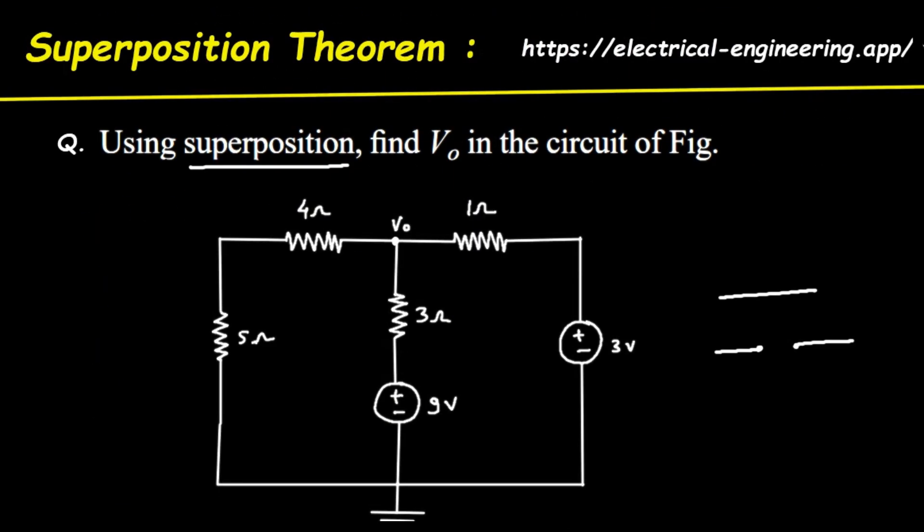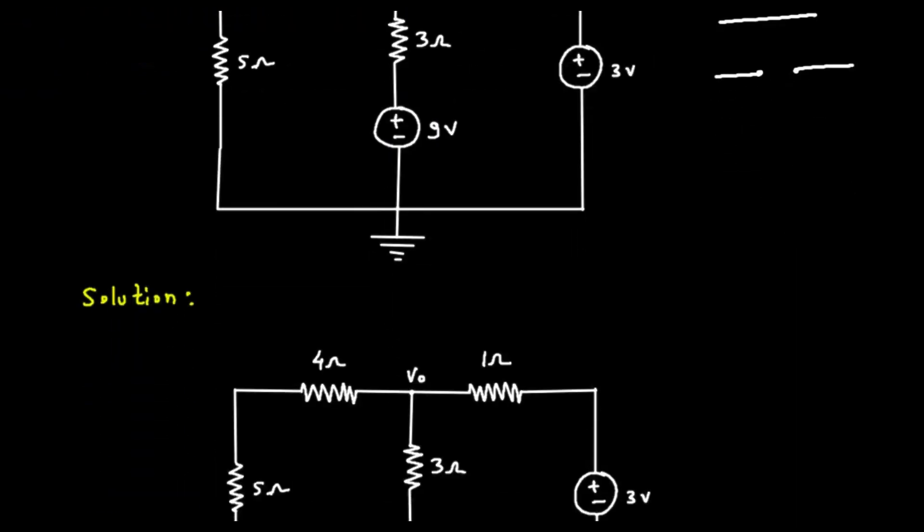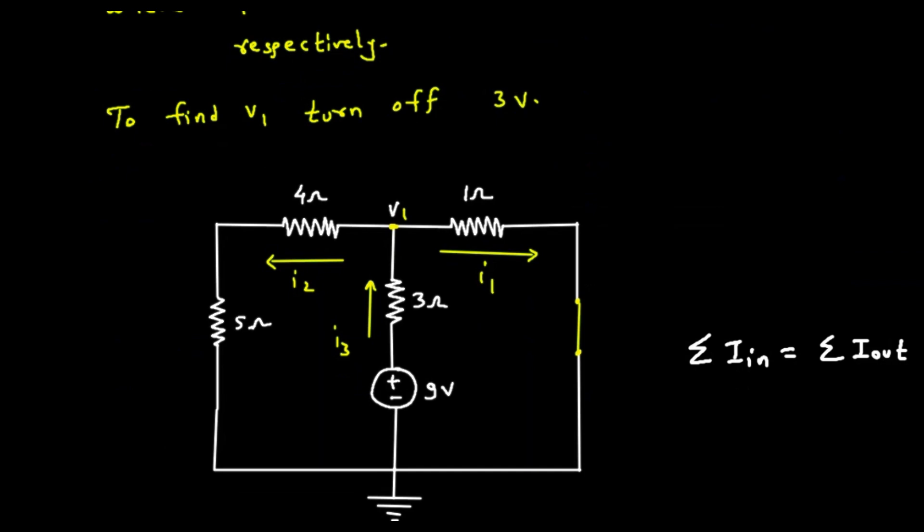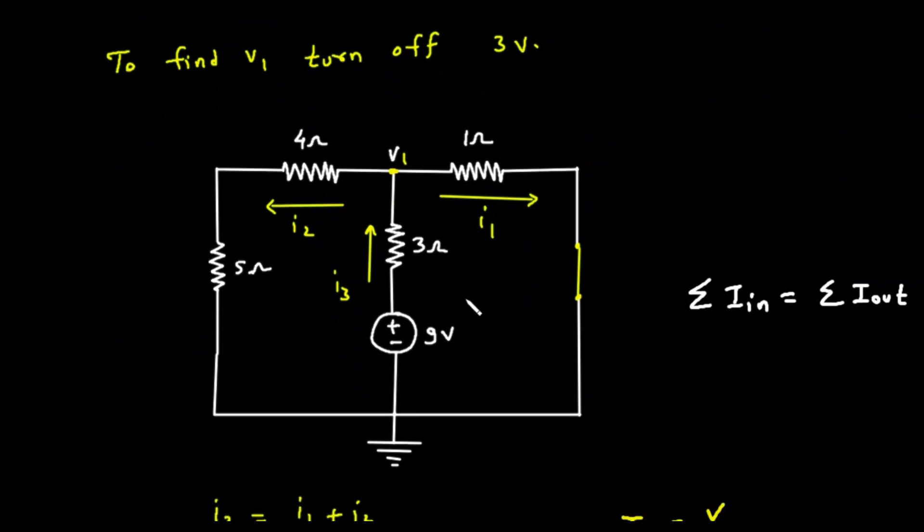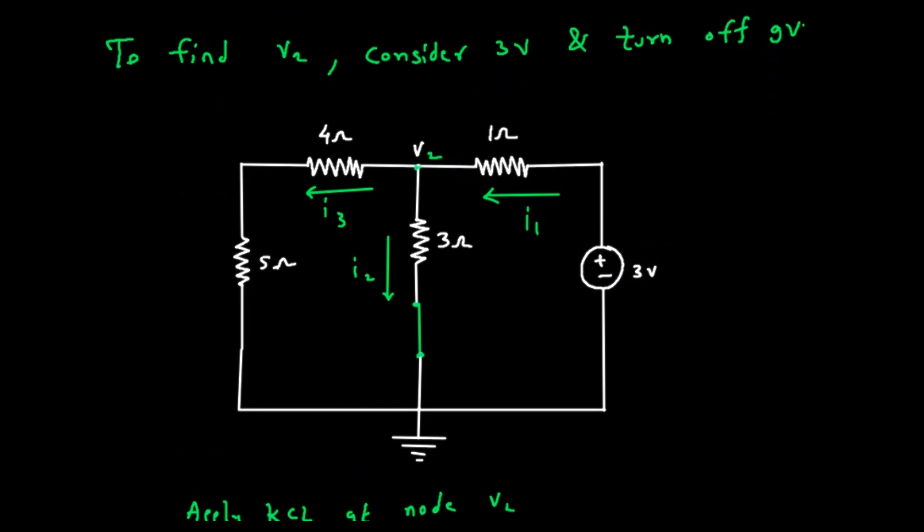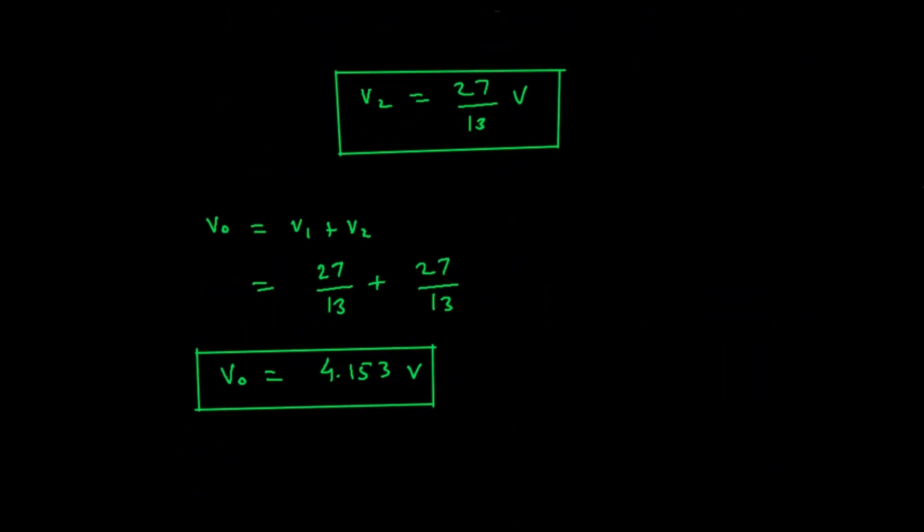Let's quickly recap what we did. We started with a circuit that had two voltage sources. To find the voltage V0, we used the superposition theorem. We broke the problem into two simpler parts. First, we found the voltage contribution from the 9-volt source alone, which we called V1. Then, we found the contribution from the 3-volt source alone, which we called V2. In each case, we used Kirchhoff's current law and Ohm's law to solve for the unknown voltage. Finally, we added our two results, V1 and V2, to get our final answer for V0. This method allows us to tackle complex circuits by analyzing them one piece at a time. I hope this detailed walkthrough was helpful and made the concepts of superposition and circuit analysis easier to understand. Thank you for watching.